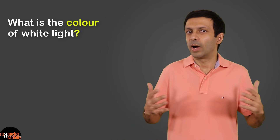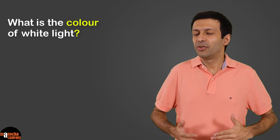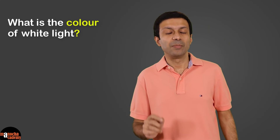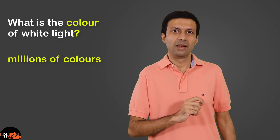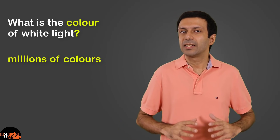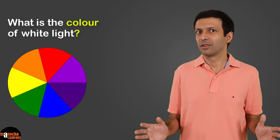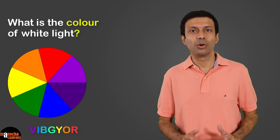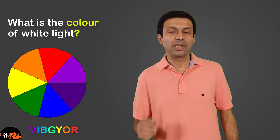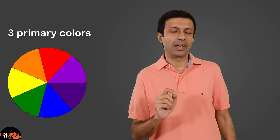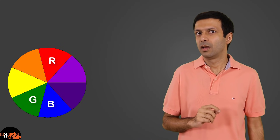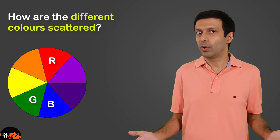Before we analyze scattering, let me ask you: what is the color of white light? Is it really white? White light is made up of millions and millions of colors. For simplicity, we take it as the seven rainbow colors — the VIBGYOR colors. In this video we'll simplify it even further and just take the three primary colors: red, green, and blue. Now, are the different colors scattered in the same way?